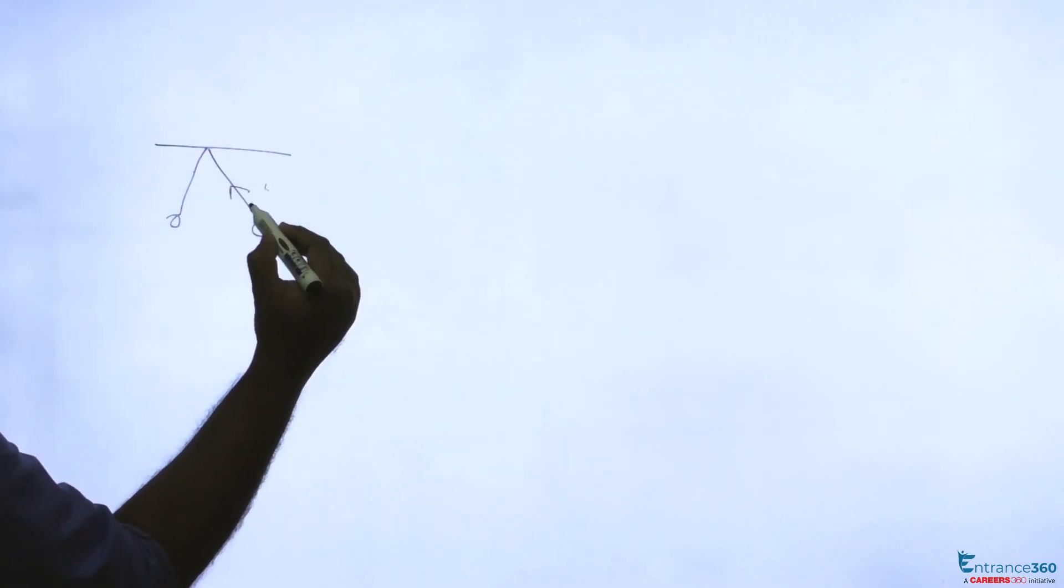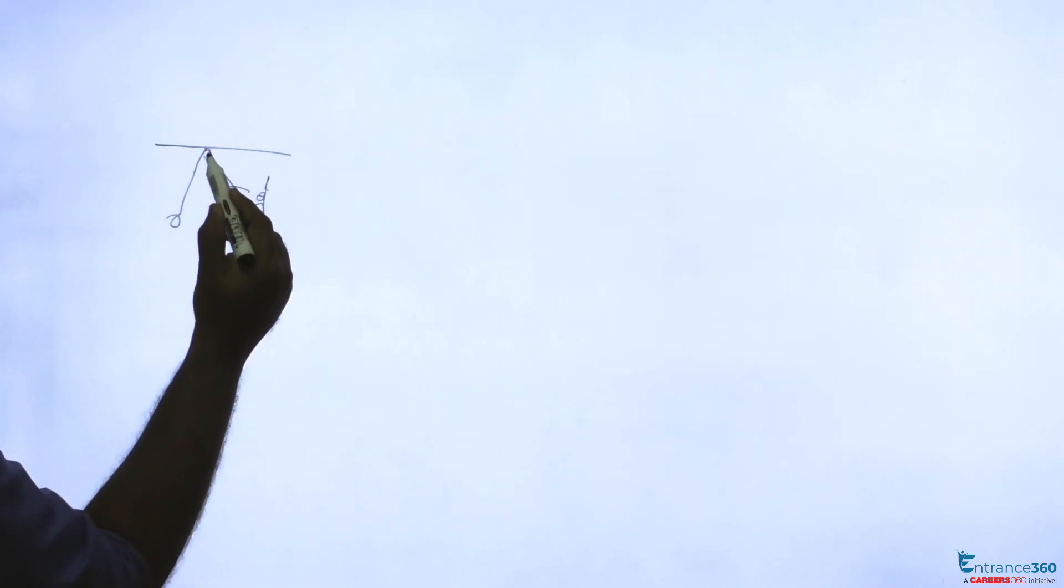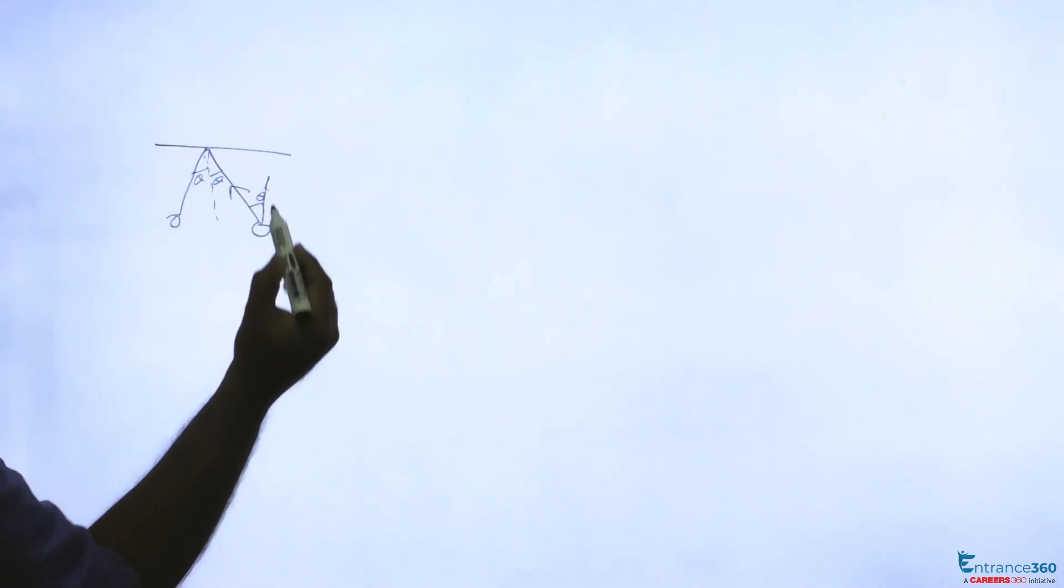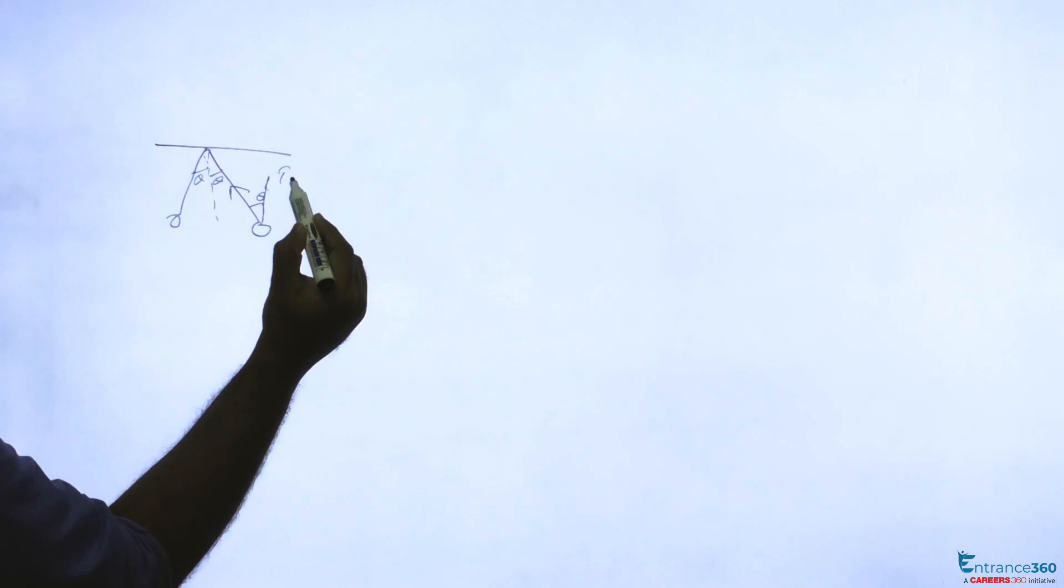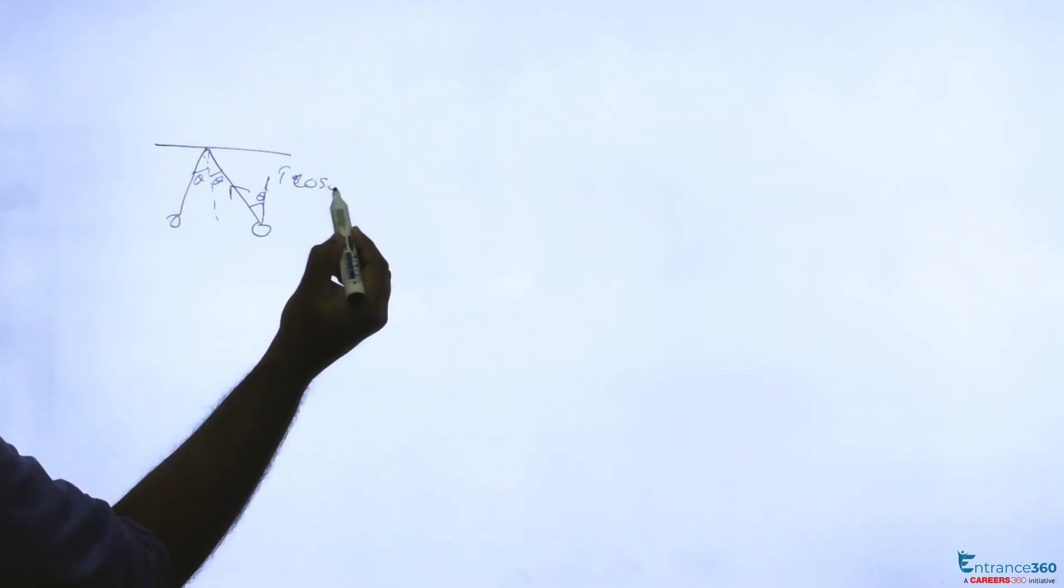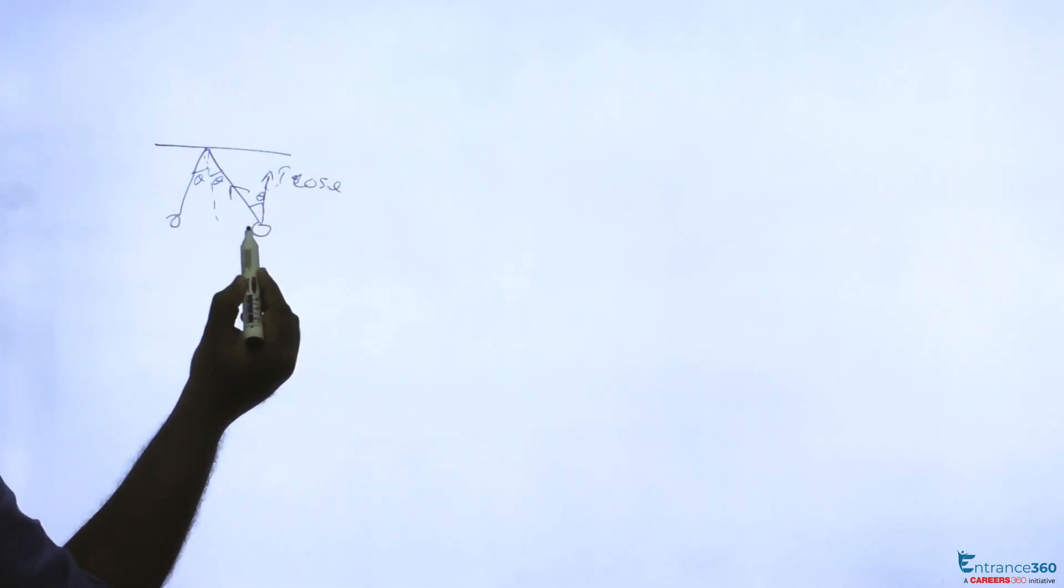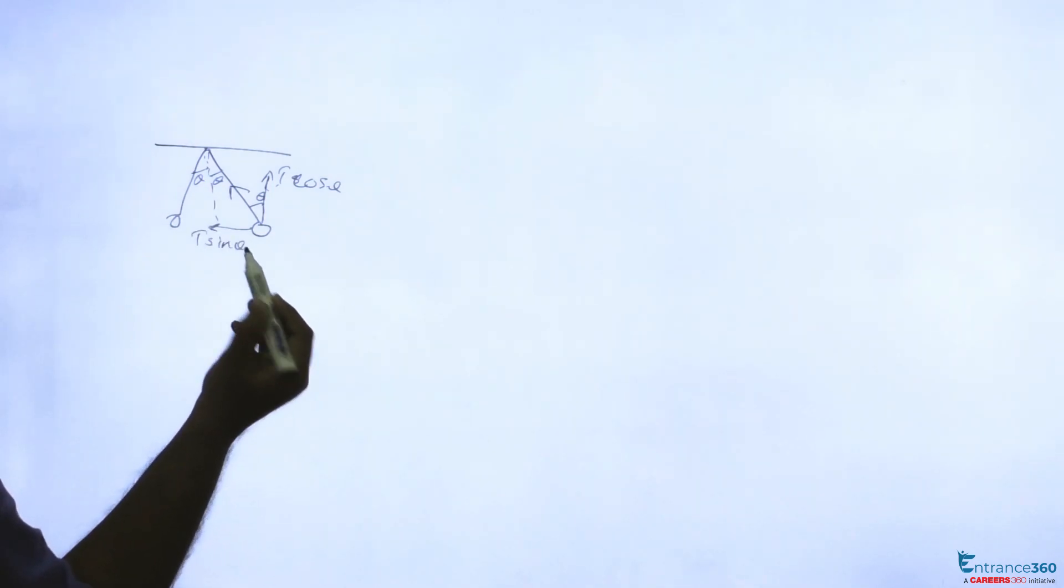If this is theta, say this is theta, it will be T cos theta, this will be T sine theta, resulting in mg.